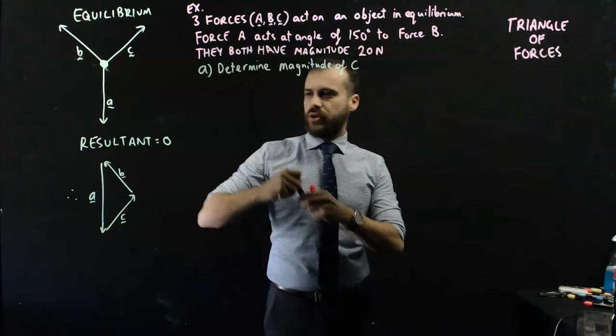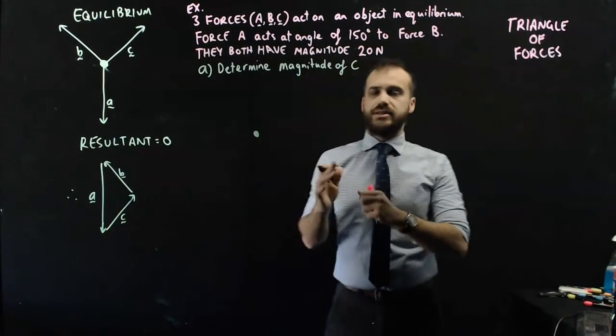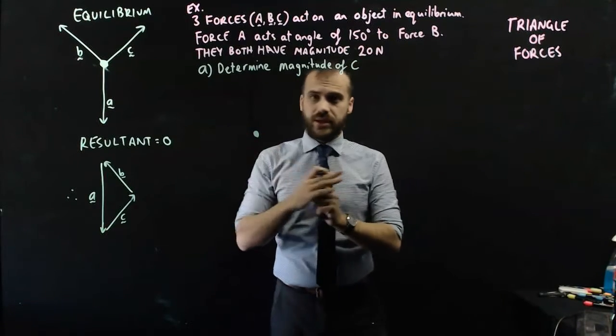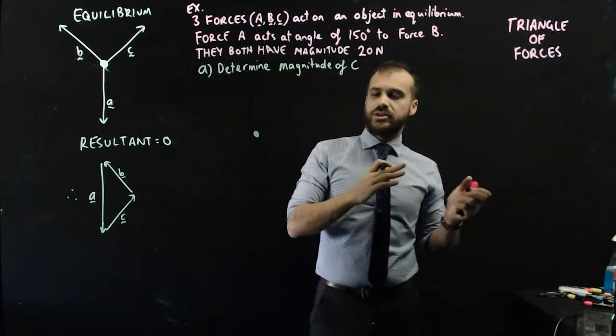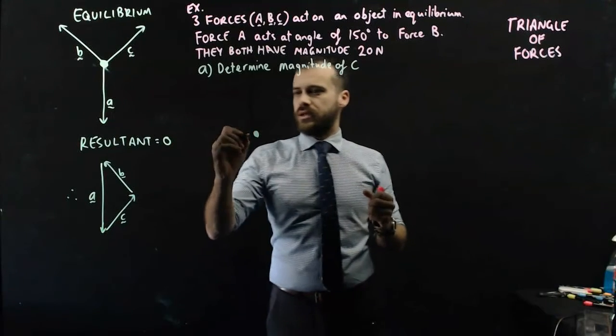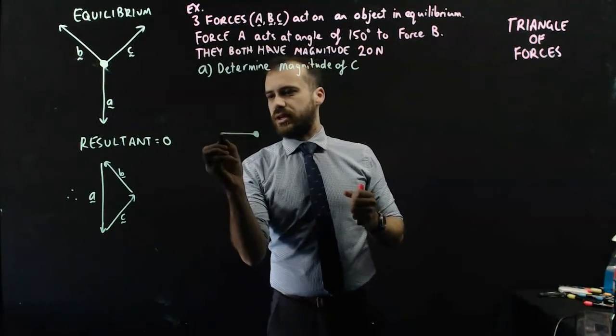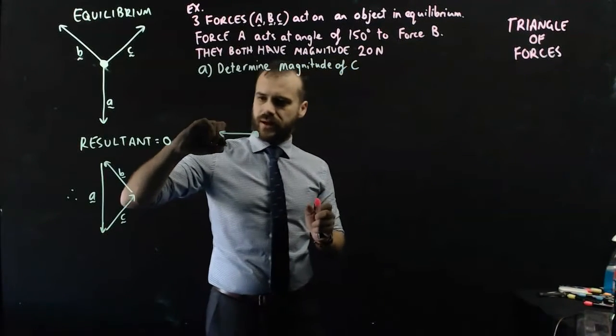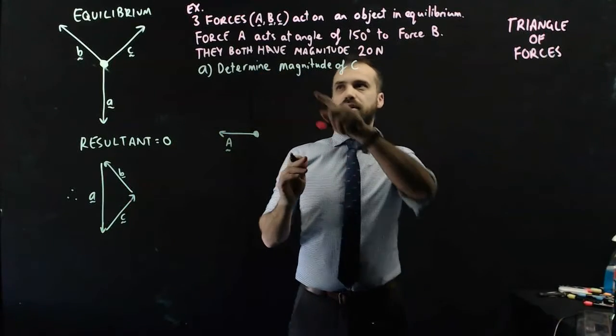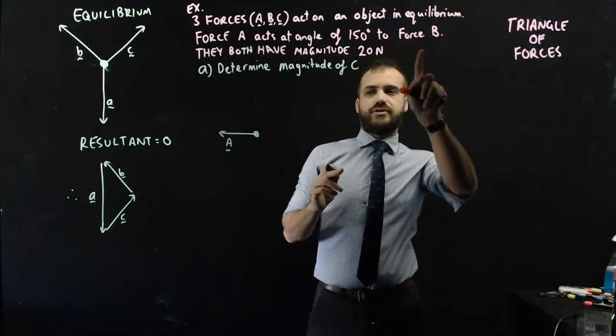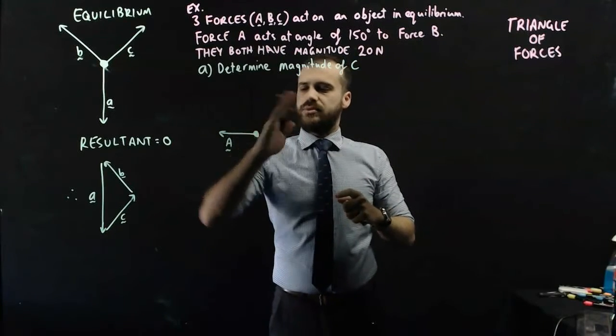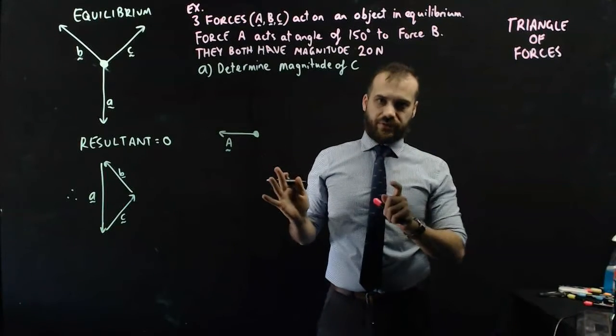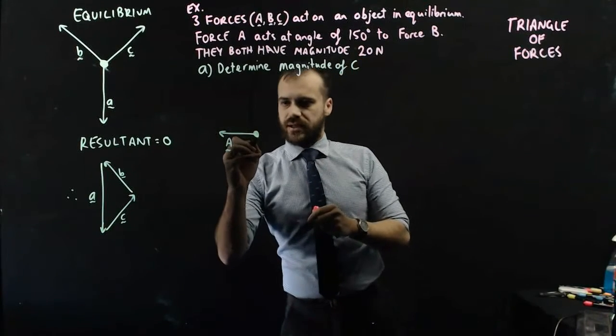I'm going to just draw up my image. I've got an object. It's being acted on by two forces, A and B. I don't know what direction A is going in. I don't know what direction B is in. So I'm just going to put them on there. I'm going to say that A is going in this direction. That's just a personal choice. It could have been there. It could have been there. It doesn't matter. What about vector B? Well, I know that X at an angle of 150 degrees to force B.